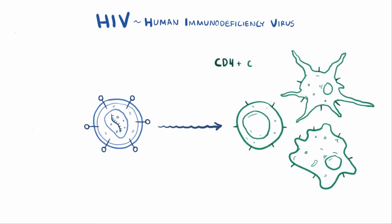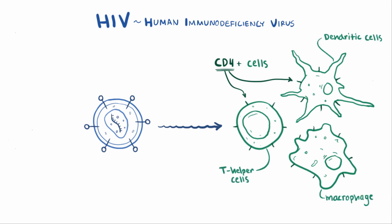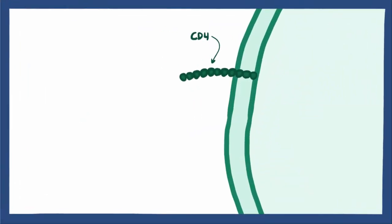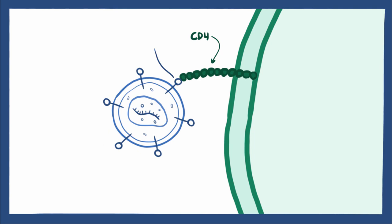HIV targets CD4-plus cells, meaning cells that have the specific molecule called CD4 on their membrane. Macrophages, T helper cells, and dendritic cells are all involved in the immune response and all have CD4 molecules, therefore they can be targeted by HIV. The CD4 molecule helps these cells attach to and communicate with other immune cells, which is particularly important when launching attacks against foreign pathogens. HIV targets and attaches to the CD4 molecule via a protein called GP120, found on its envelope.